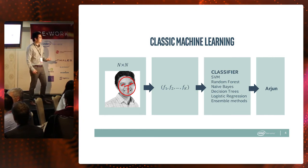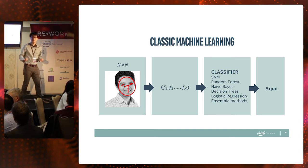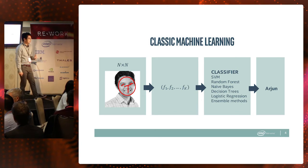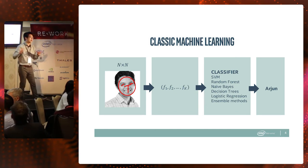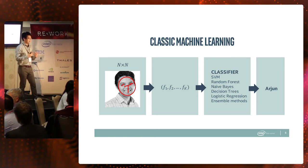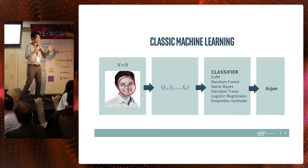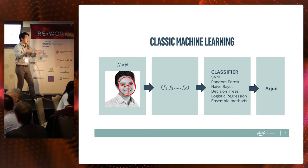Sometimes features are difficult to understand or come up with if you don't have the necessary domain knowledge, or they may be difficult to compute. Deep learning is end-to-end: you send the raw image directly to a large neural network — sometimes on the order of tens of millions of parameters — and given enough data, it will find the informative features itself. This is a conceptual shift from asking 'how do I engineer the best features?' to 'how do I guide the model towards finding the best features itself, given enough data?'